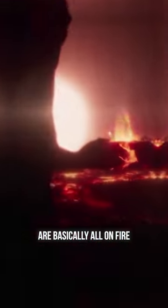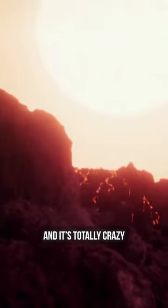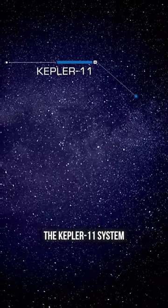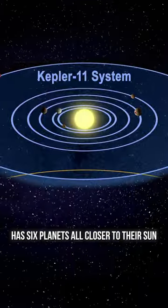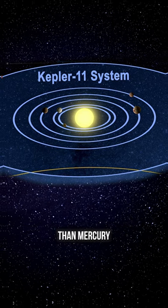This solar system's planets are basically all on fire, and it's totally crazy. The Kepler 11 system, which is about 2100 light years from Earth, has 6 planets all closer to their sun than Mercury.